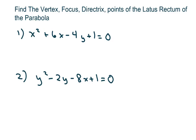Hi everyone, we're going to find the vertex, focus, directrix, and points of the latus rectum of each of these two parabolas here. The first thing we have to do is complete the square, and then graph these from the standard form of a parabola.